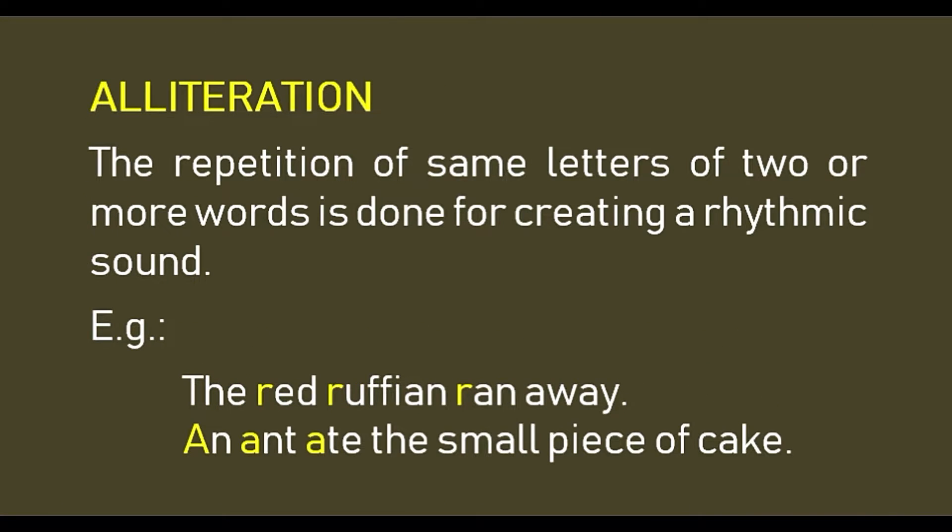Alliteration: the repetition of the same letter in two or more words, creating a rhythmic sound — the first letter of the words is repeated. For example, 'the red roofian ran away' and 'an ant ate the small piece of cake'.